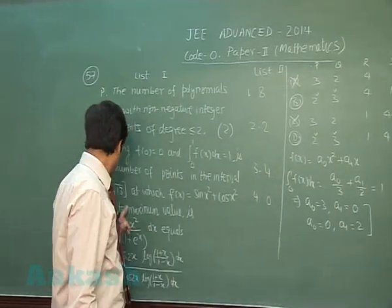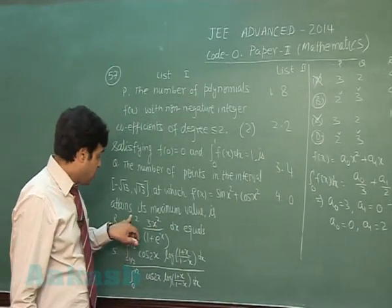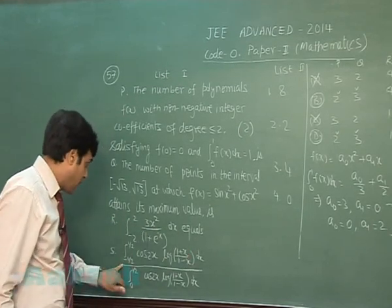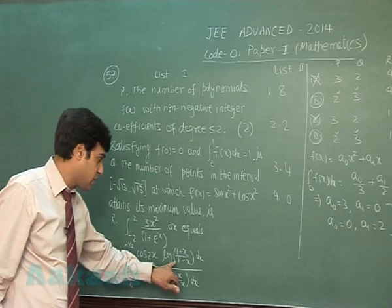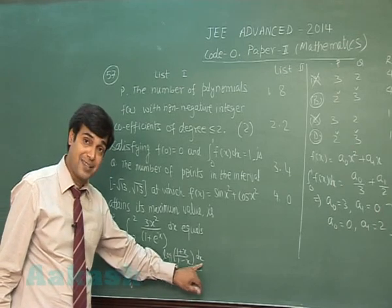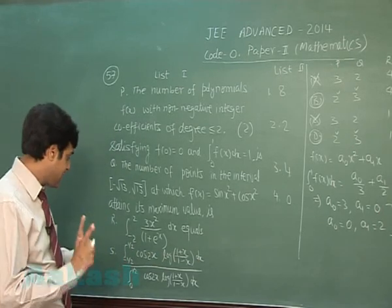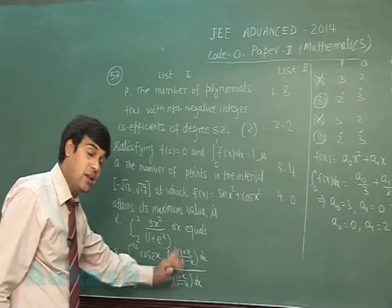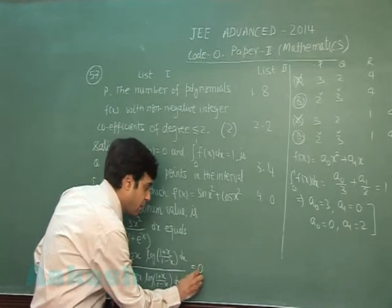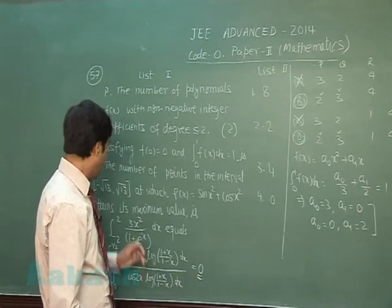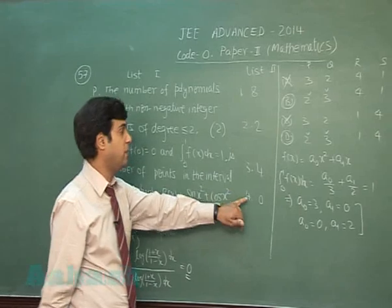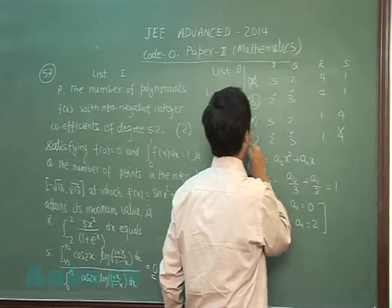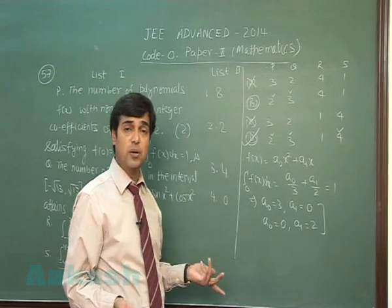For the third integral, from −2 to 2 of 3x²/(1 + xᵉ) dx, and the fourth one from −½ to ½ of cos(2x)·log((1+x)/(1−x)) dx. For S, the numerator cos(2x)·log((1+x)/(1−x)) is an odd function, so the integral is 0. This value being 0 means for S the correct term is 4.